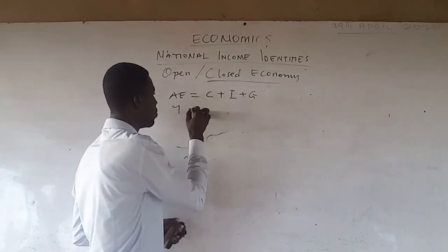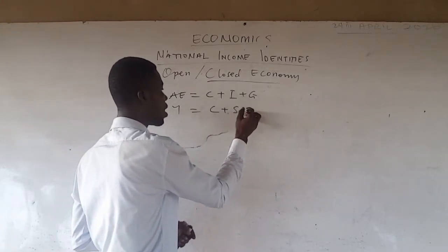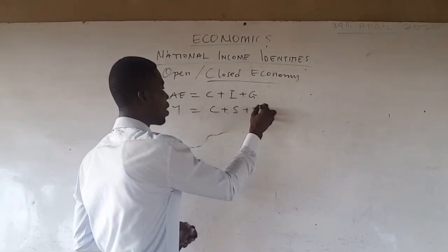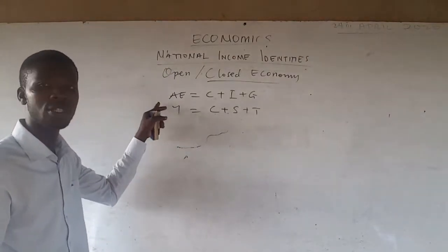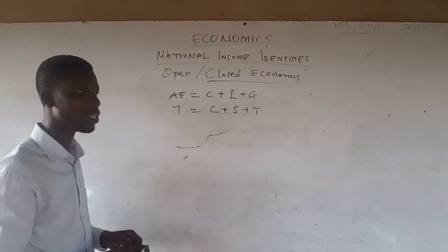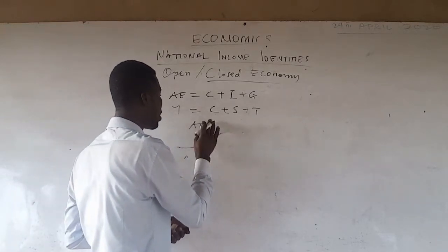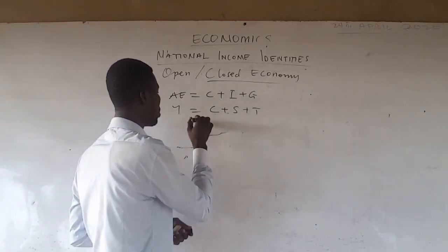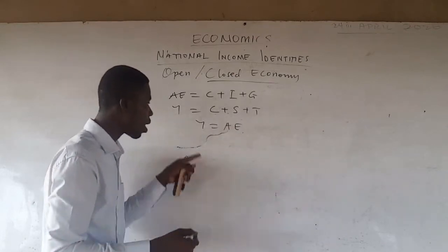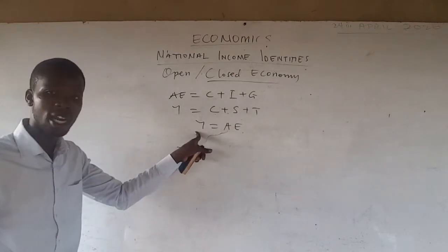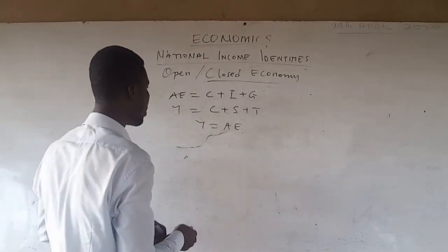We also know that our national income — we either consume, save, or pay taxes. So these are the two identities for aggregate expenditure and national income. We know that at equilibrium, our aggregate expenditure equals our national income, so we equate these two identities.